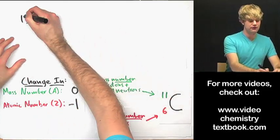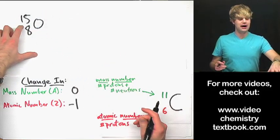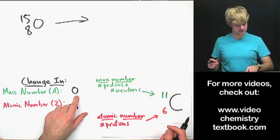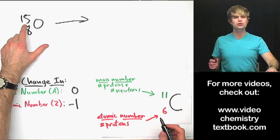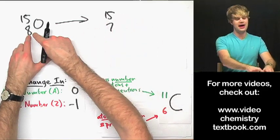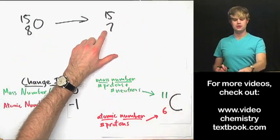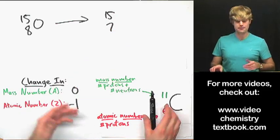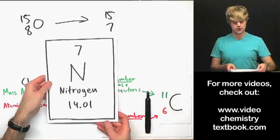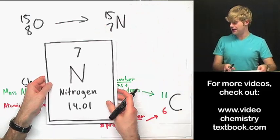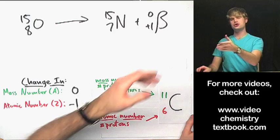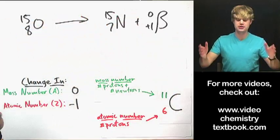Let's say I have an atom of oxygen-15. What am I going to end up with after positron decay? The mass number? Absolutely nothing changes — so it's going to be 15. The atomic number goes down one, so the new element will have seven protons. I go to the periodic table — which element has an atomic number of seven? It's nitrogen, so I put a big N there. I also write the symbol for my positron shooting out of the atom.